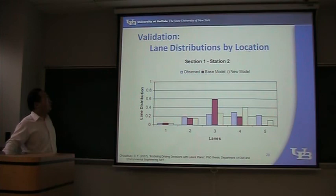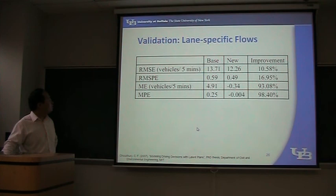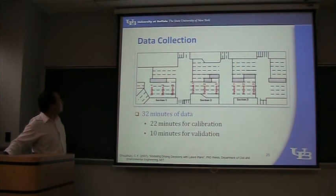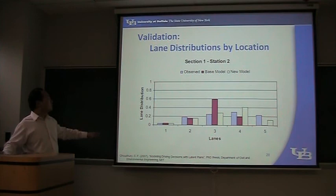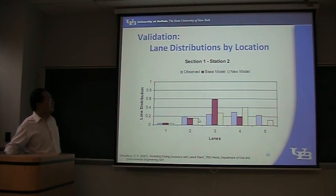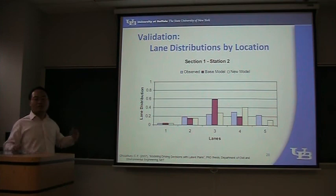The third validation is for lane distribution by location, and this is the most interesting finding. For section one, station two, they have five lanes. For each lane, they compare the lane distribution of vehicles. They found that the observed distribution is close to the new model, especially in the center lane. These are the methods they used to calibrate and validate their model — I want you to understand what they have done.